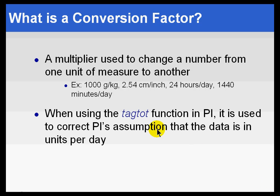Every PI tag has a conversion factor attribute, and typically that conversion factor is ignored. It defaults to 1, so there really is no conversion. But that's a multiplier that's used to change the number from one unit of measure to another.